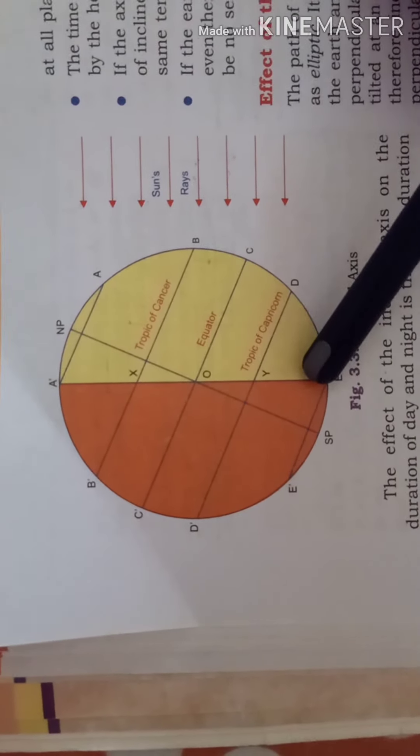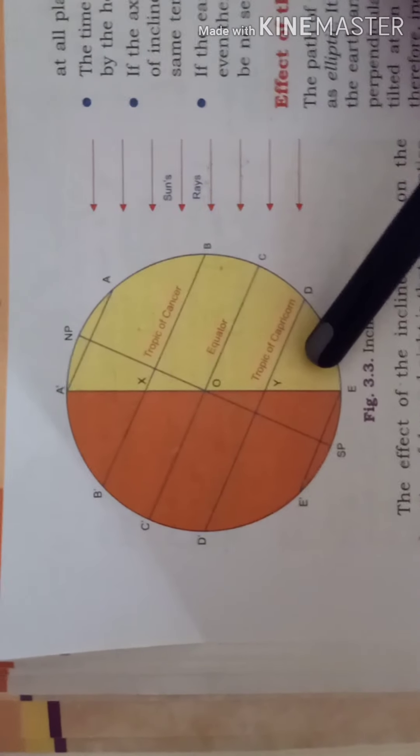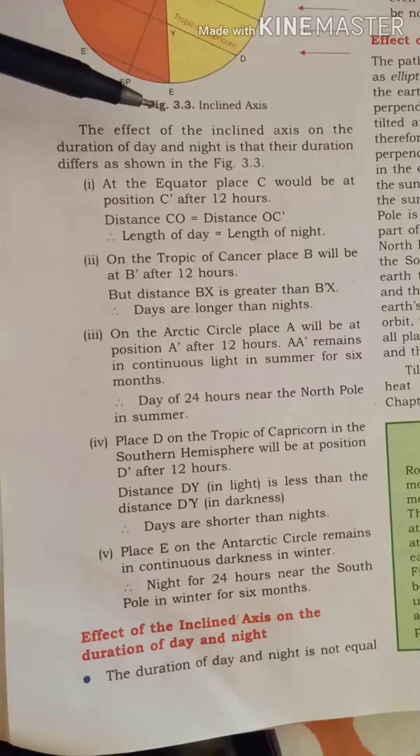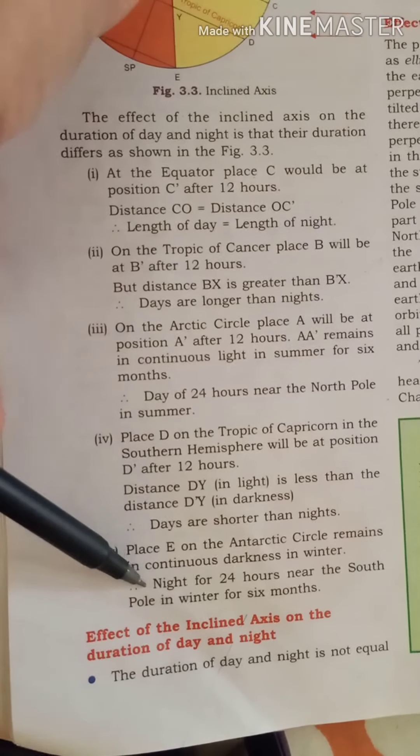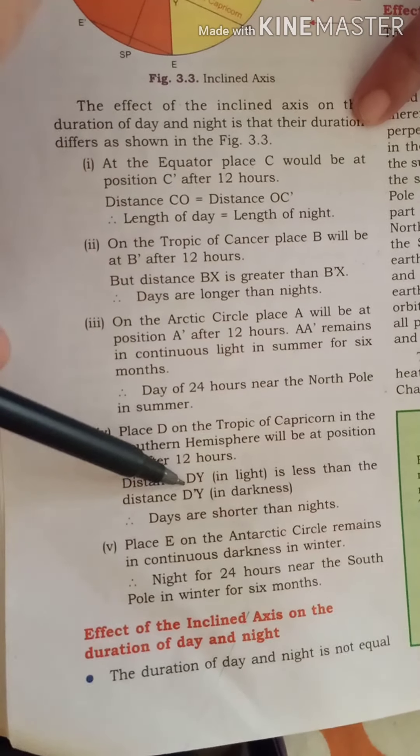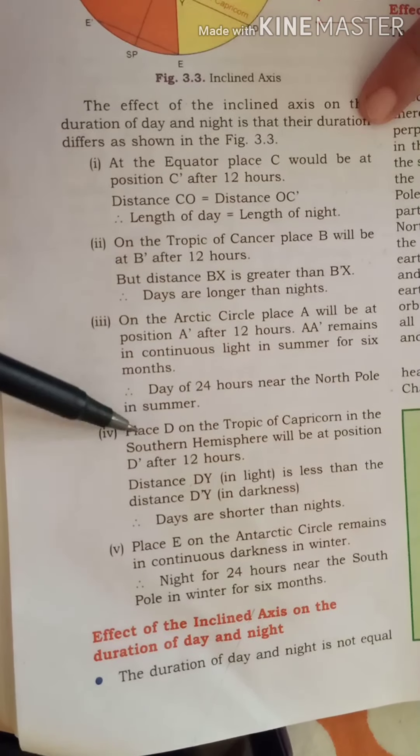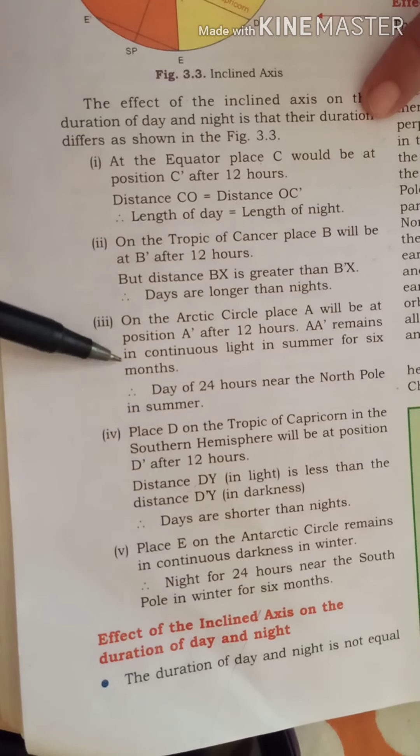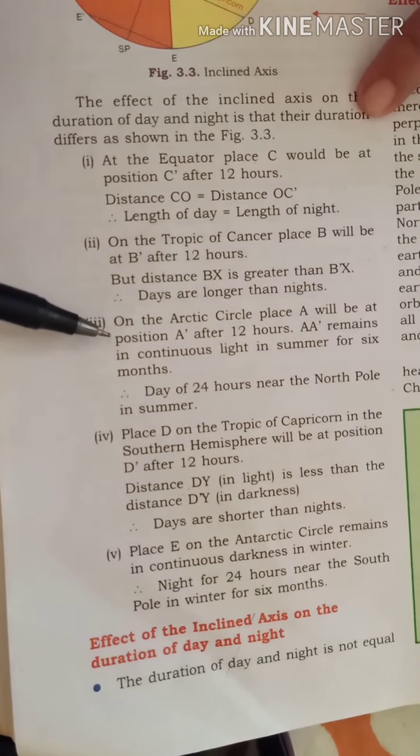I hope it is clear. Here I will explain again with the help of another example. Children, below this diagram in your textbook you will see a lot of written matters there. I have explained. You don't have to mug up these parts. And at the end of this class I will give you a short note on the inclined axis which you must note down in your copies.